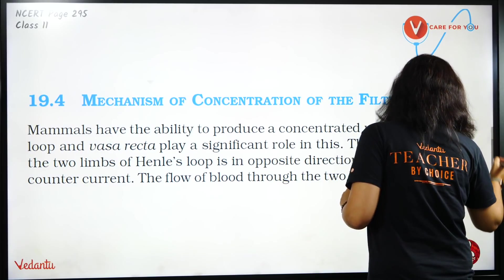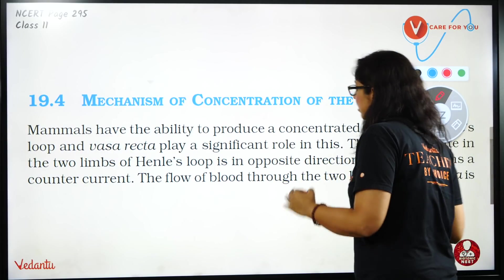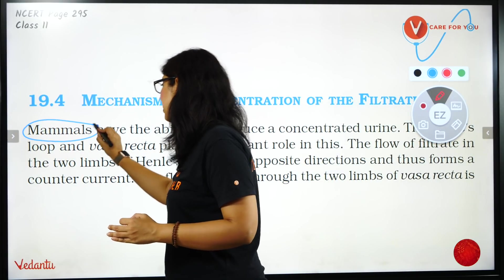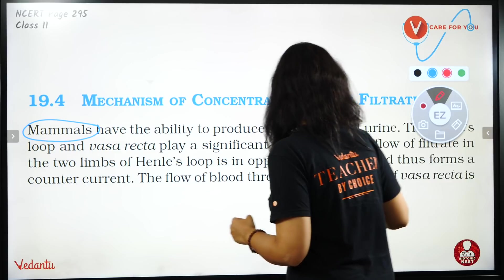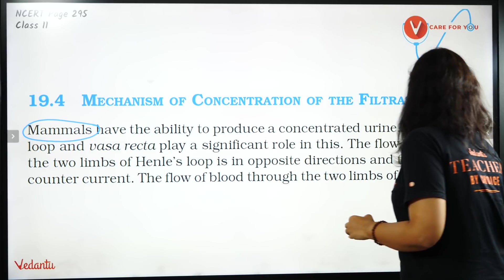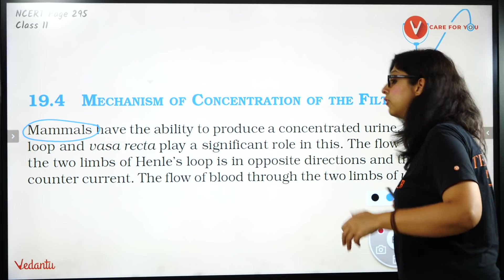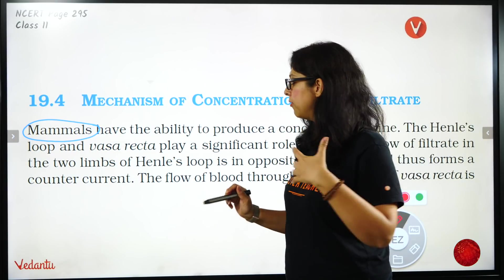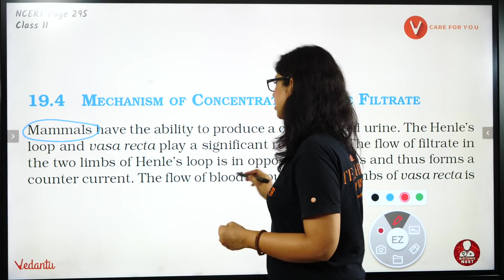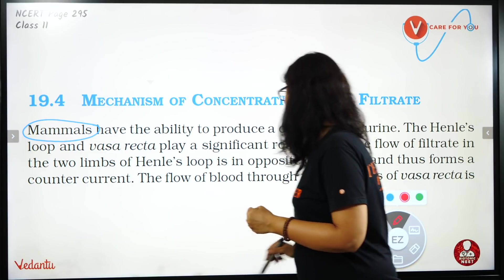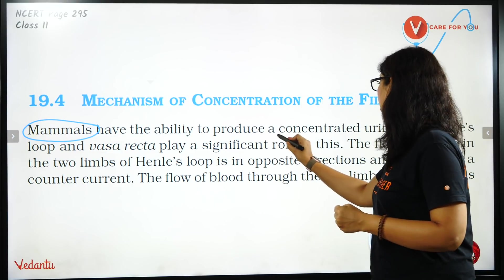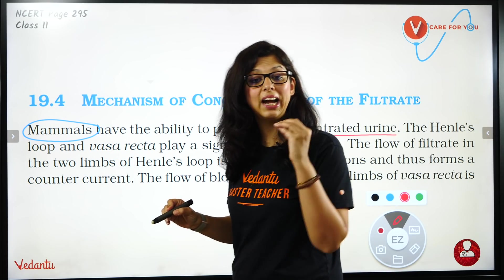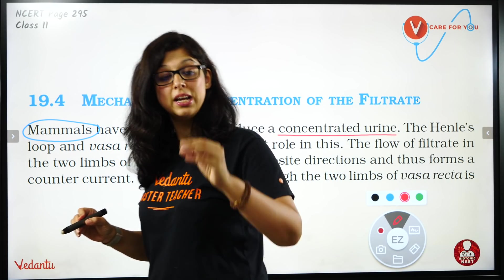Mammals is word number 1. Mammals के पास एक ability होती है — it happens in mammals — they can produce concentrated urine ताकि वो बहुत ज़्यादा water loss ना करें, वो अपनी body में water को conserve कर सकें. So mammals के पास एक ability होती है ताकि वो बहुत concentrated urine बना सकें — urine dilute ना हो.